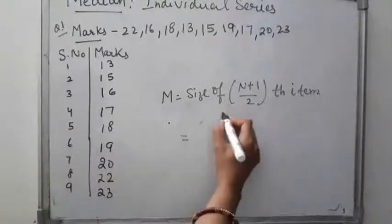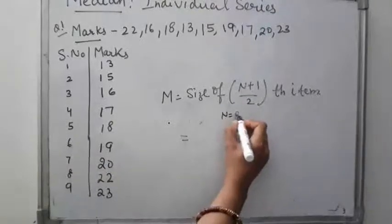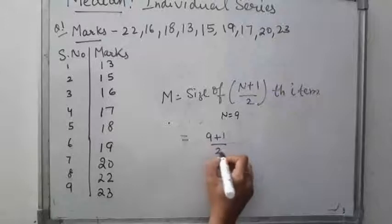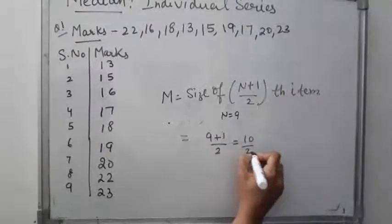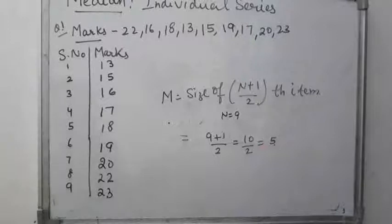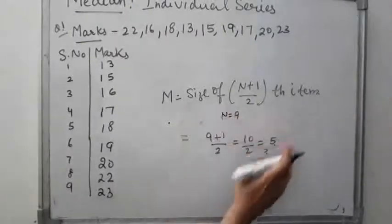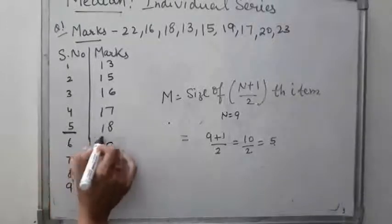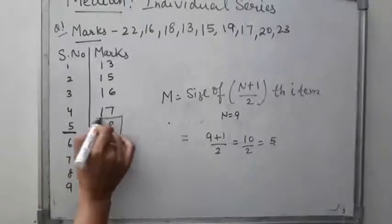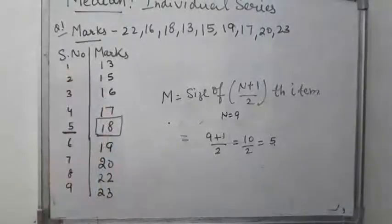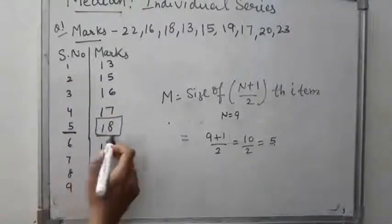It means we need the 5th item of the series. The 5th item is 18. So the median marks of the students is 18.